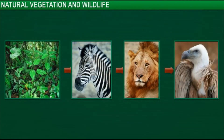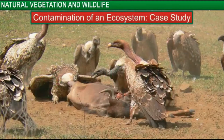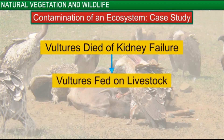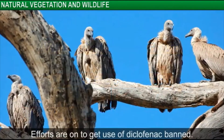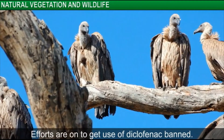If any of the components of an ecosystem is removed or contaminated, the result can be disastrous. Here is a case study that illustrates this. In the Indian subcontinent, a large number of vultures were dying due to kidney failure. When scientists investigated the cause, they found out that these vultures had been feeding on the bodies of livestock that had been treated with diclofenac, a painkiller. At present, efforts are on to breed vultures in captivity and try to get a ban imposed on the use of diclofenac for livestock.